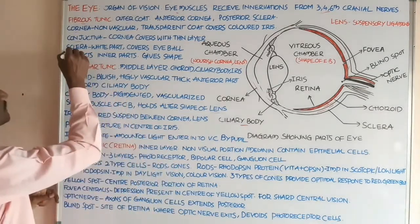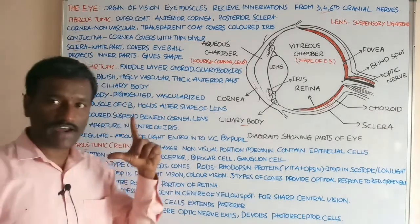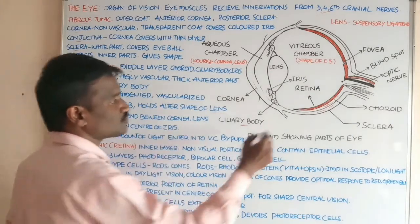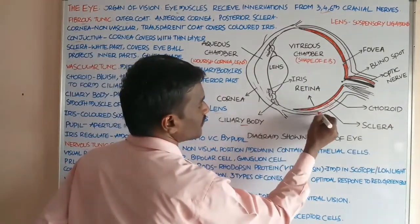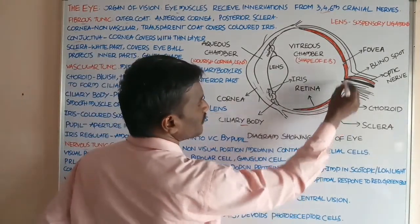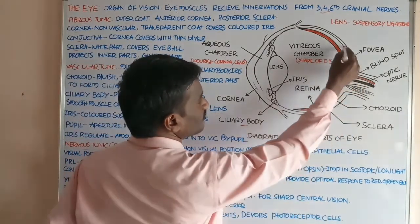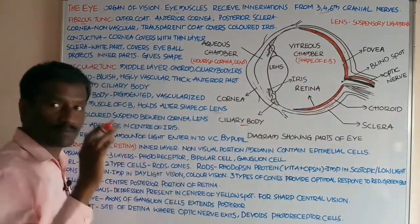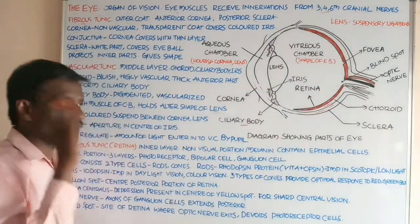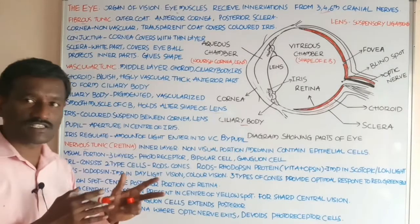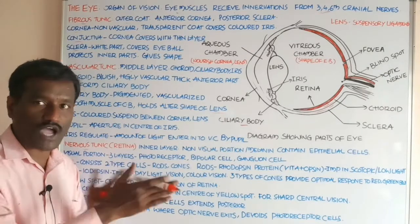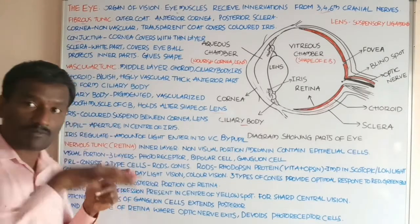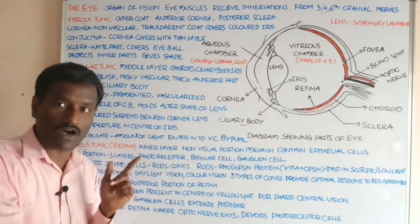The sclera is the white part of the eyeball. It provides shape to the eyeball and protects the inner parts of the eyeball.